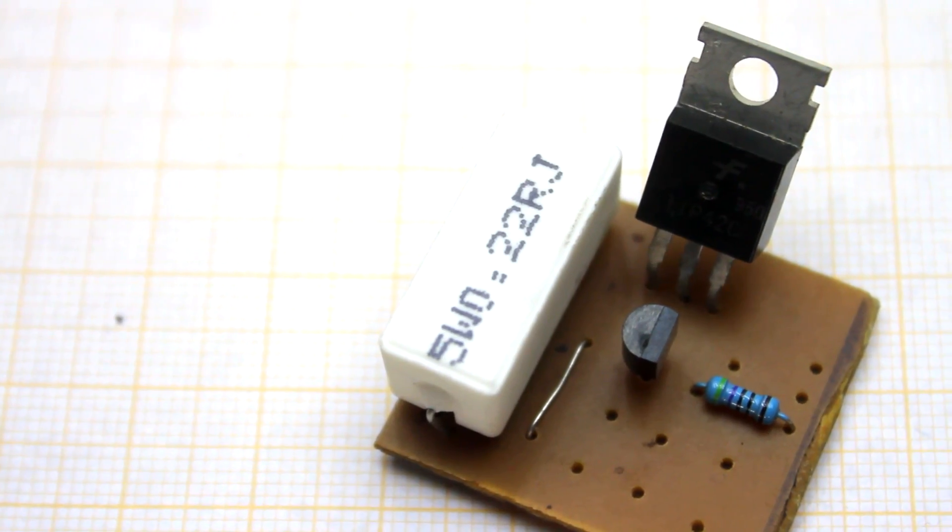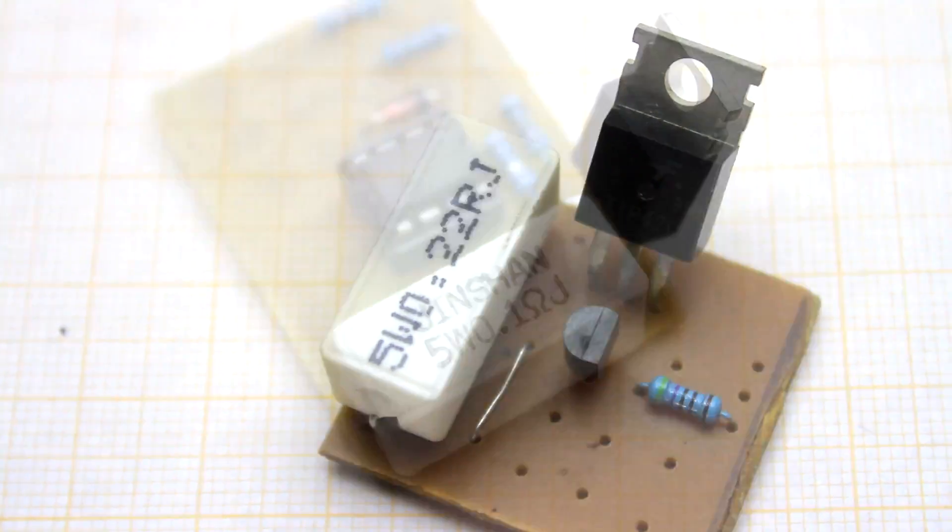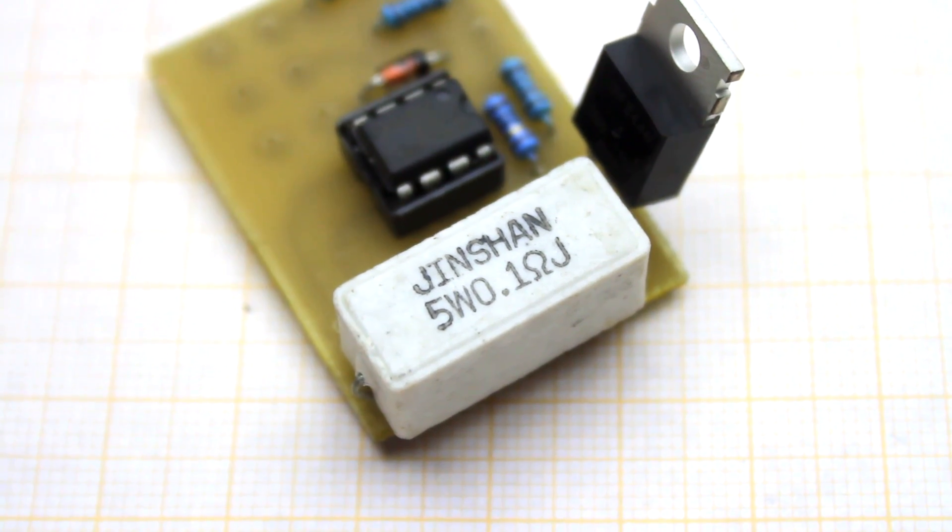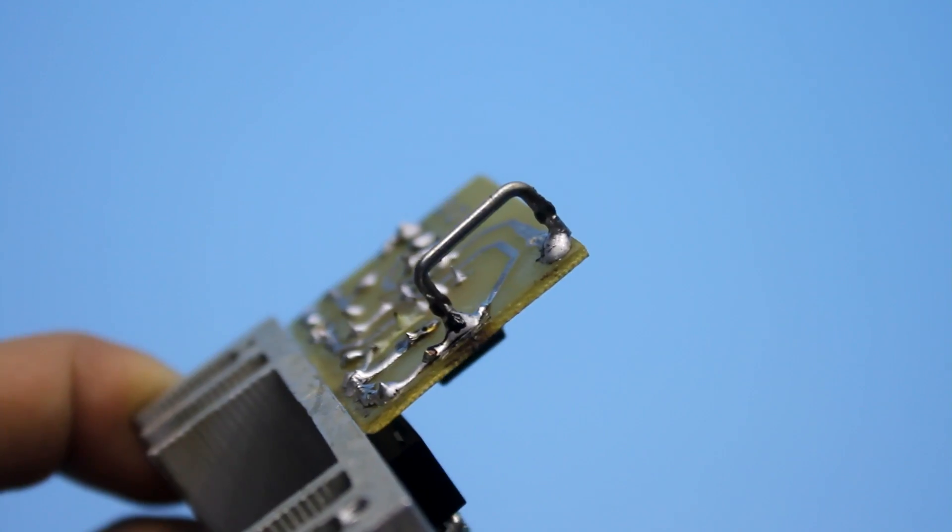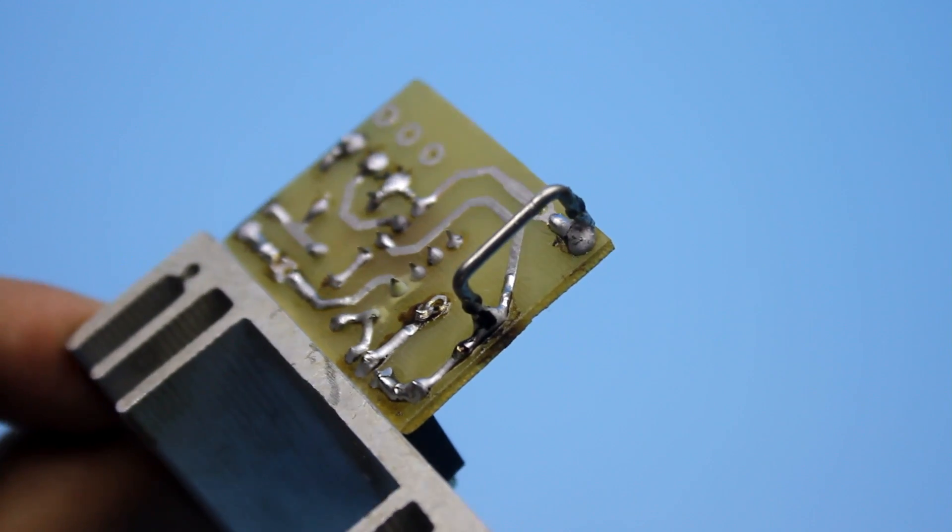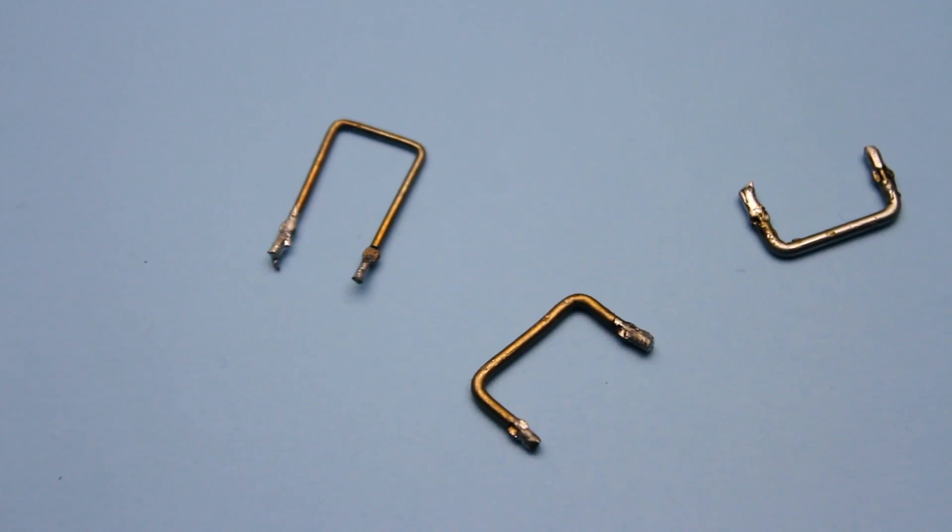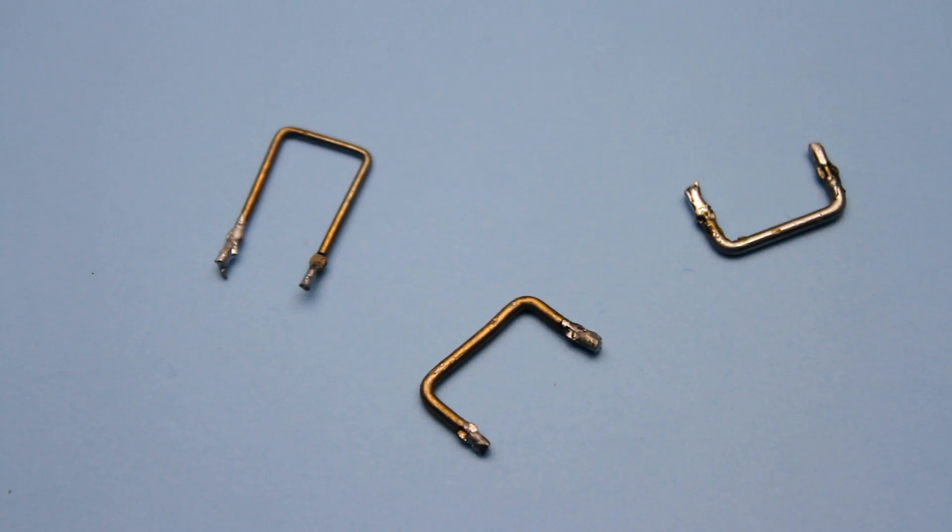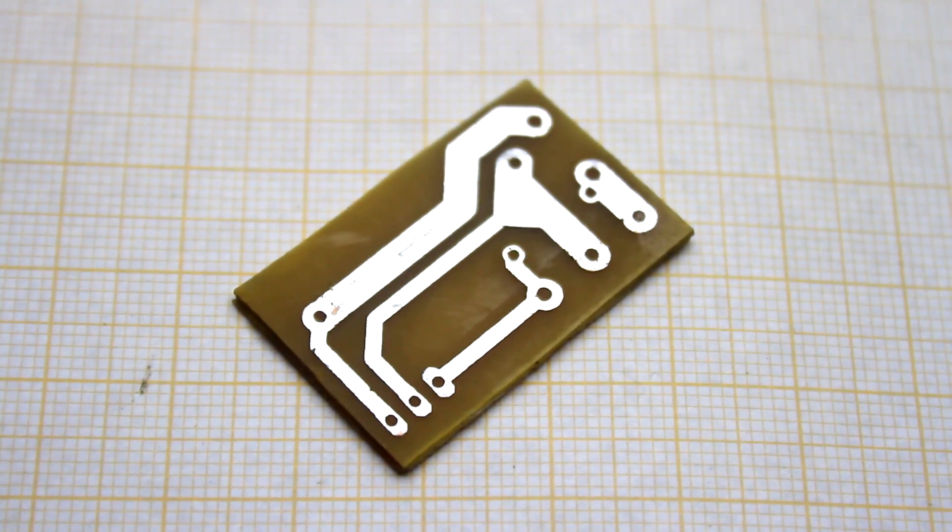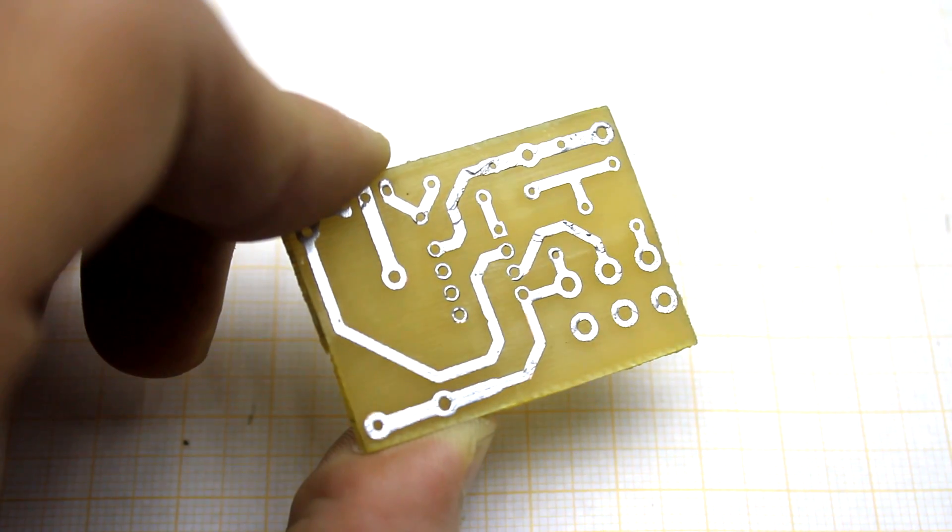Notice an important point. In all three variants, shunts are used as a current sensor. Shunt essentially is a low resistance resistor. To increase the output current of any of the mentioned circuits, it will be necessary to decrease the shunt resistance experimentally. By the way, links to all printed circuit boards will be found in the description.